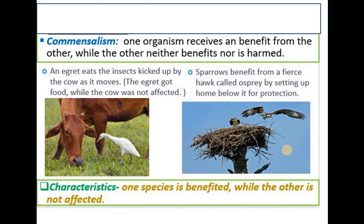In commensalism, one organism receives benefit from the other while the other remains unharmed — neither getting benefit nor being harmed. An example is the egret: it eats the insects kicked up by the cow as it moves. The egret gets food while the cow is not affected. Sparrows also benefit from the fierce hawk called the osprey by setting up home below it for protection.